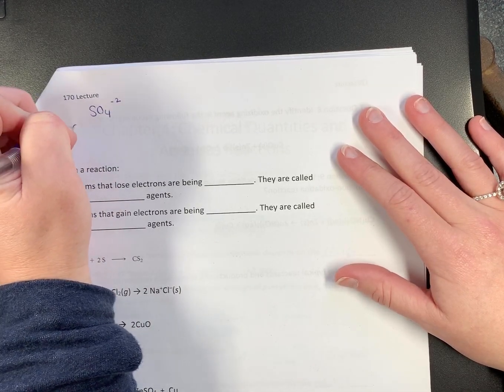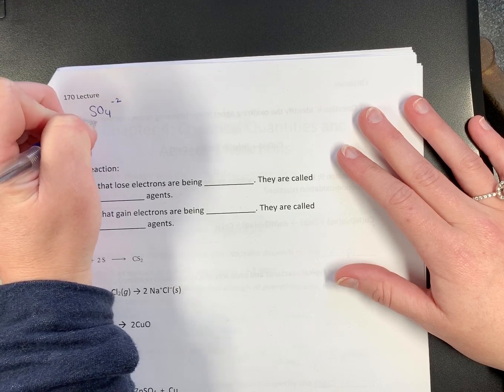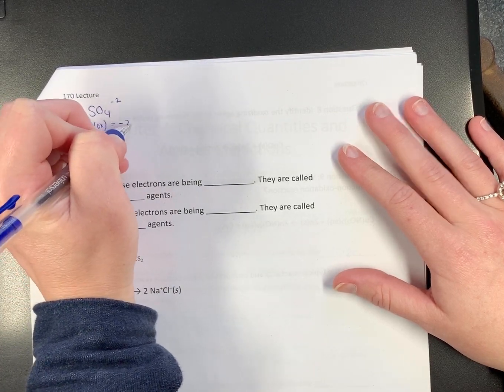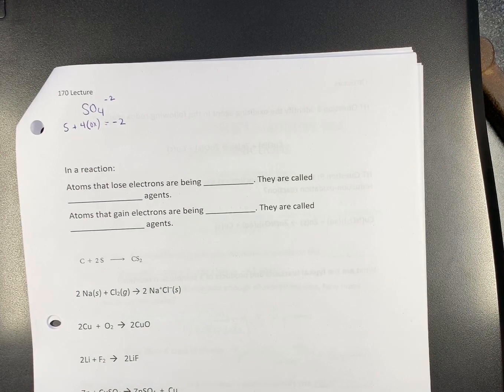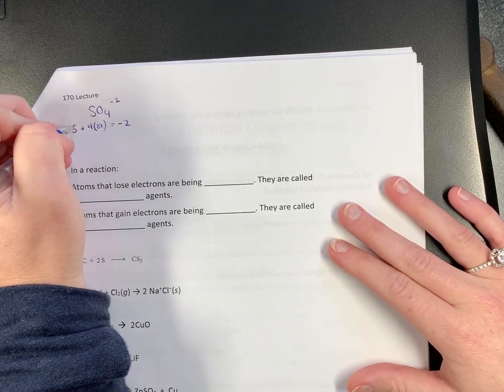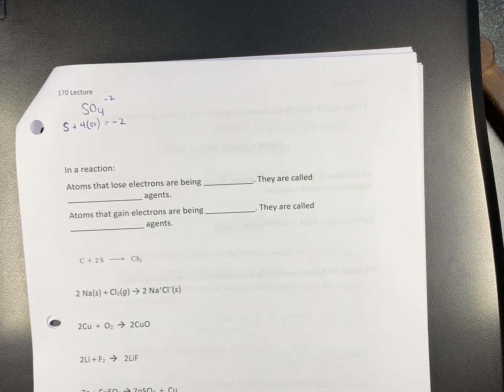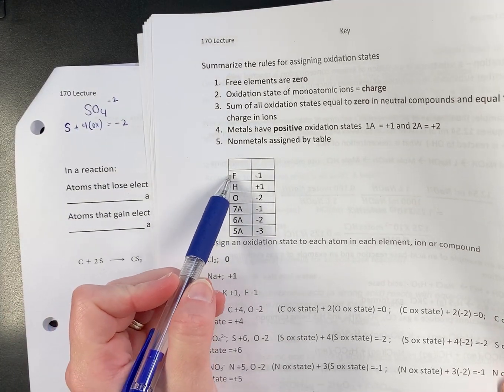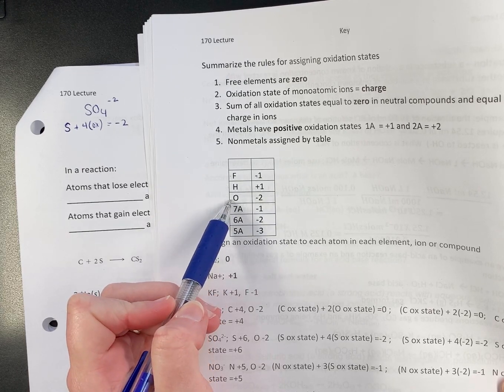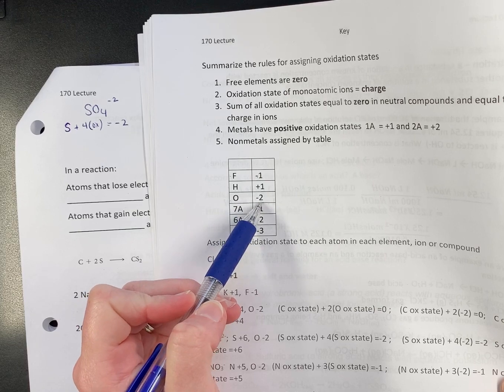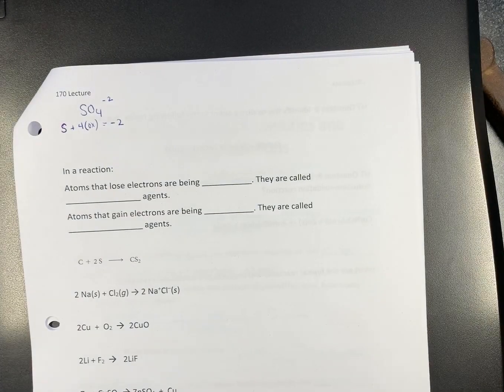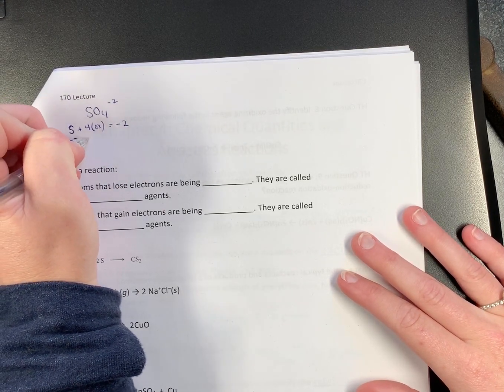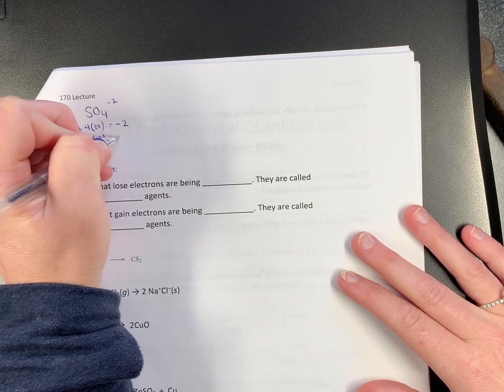So we know that S plus 4 times whatever the oxygen is equals negative 2. If you look on your table for our non-metals, we don't have fluorine, we don't have hydrogen. We do have an oxygen. And oxygen is negative 2. So now we can plug that in for oxygen. So this is sulfur, plus 4 times negative 2 equals negative 2.